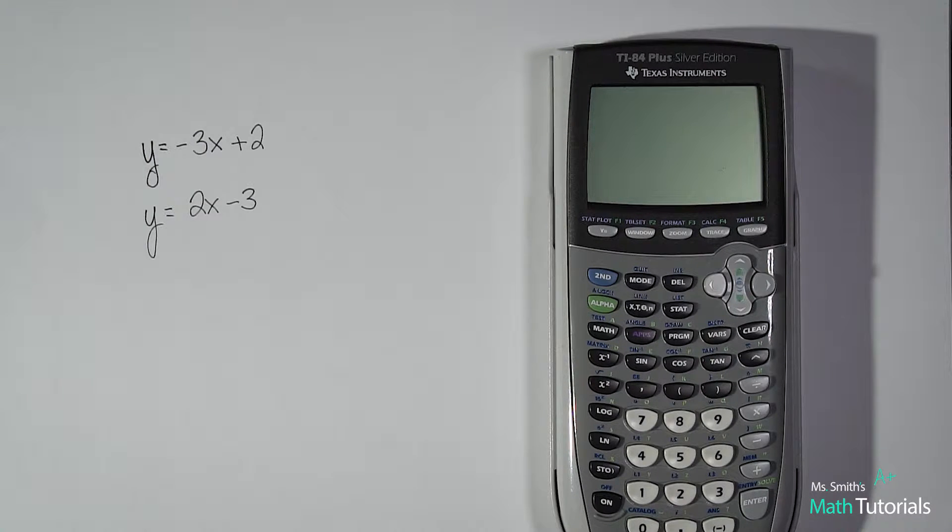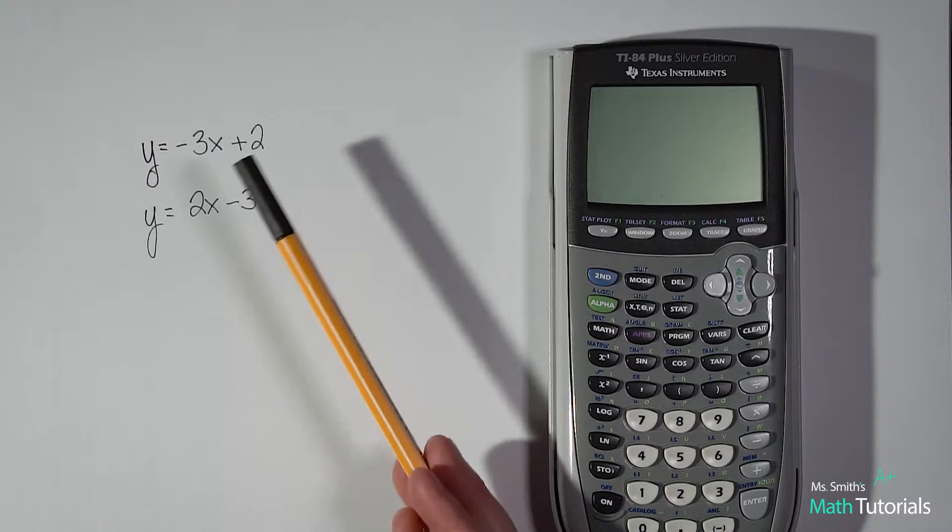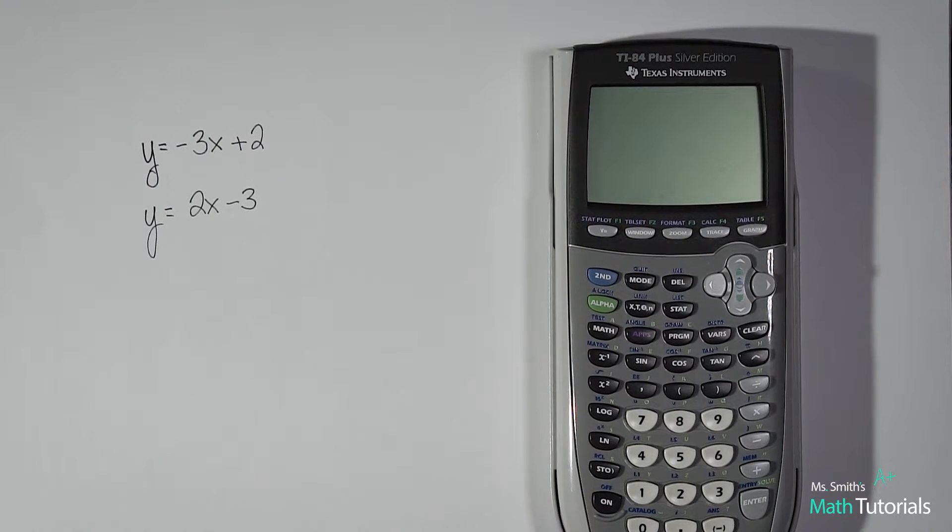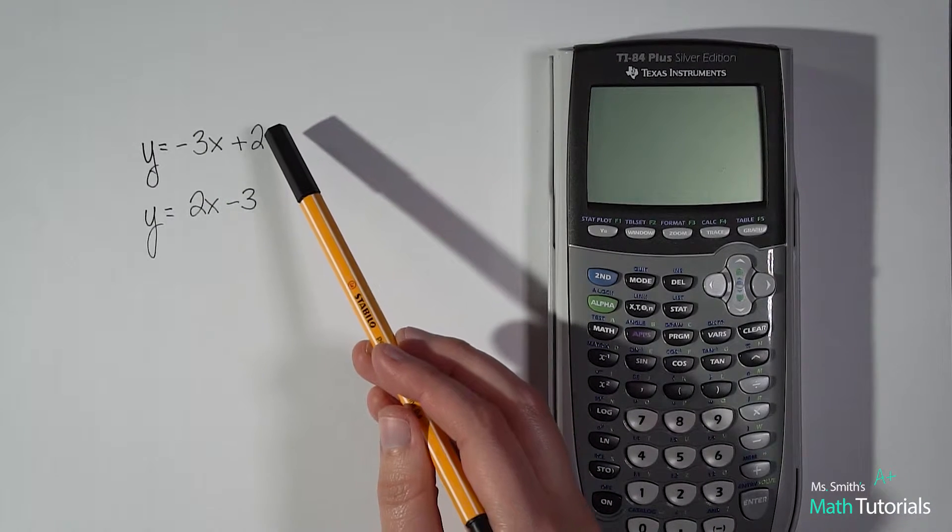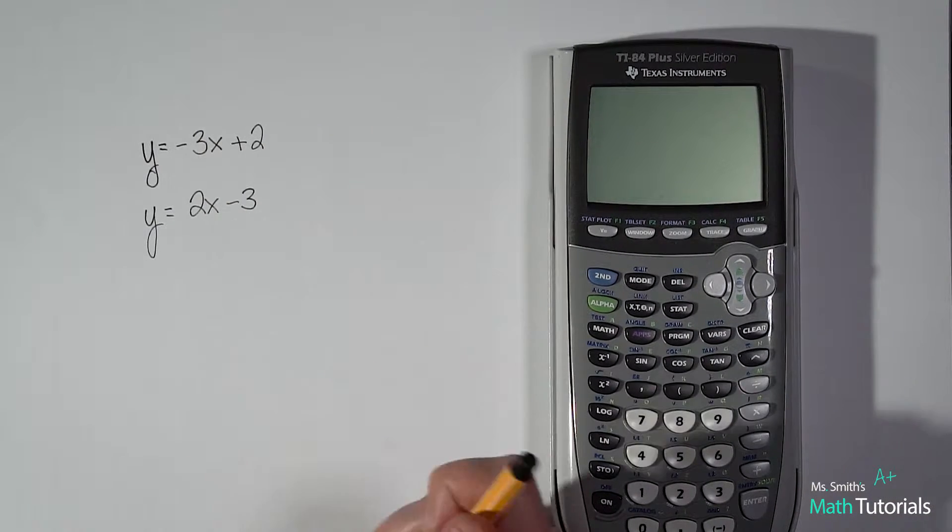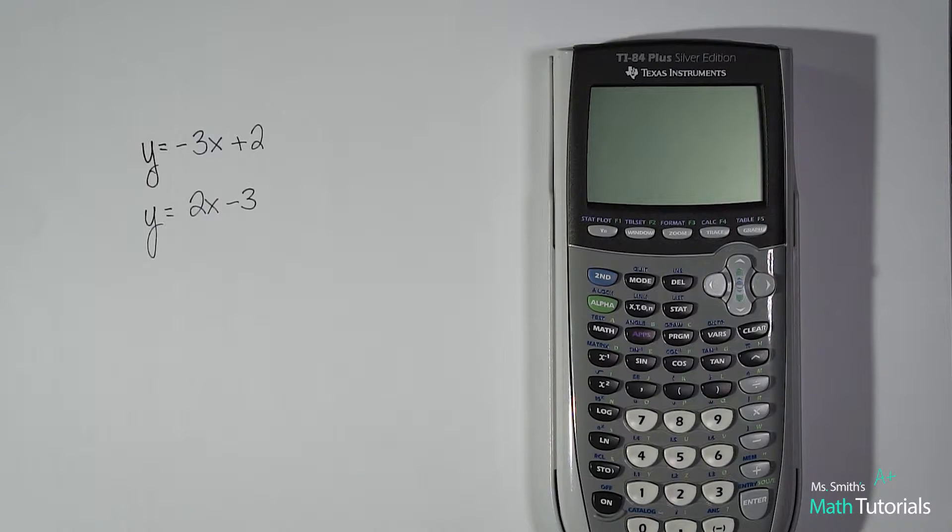Okay so your first step is when given your two equations is make sure they're in slope intercept form. So if they're not in slope intercept form you're gonna have to get them in slope intercept form. Luckily for us in both the examples that we have here we are already in slope intercept form which is y equals mx plus b. So we're ready to check this on the calculator.